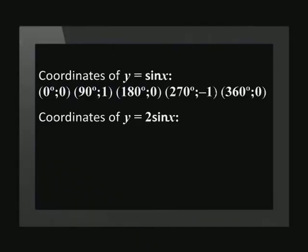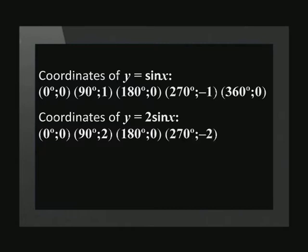Our new coordinates after multiplying the y-values by 2 are: (0, 0), (90, 2), (180, 0), (270, -2), and (360, 0).